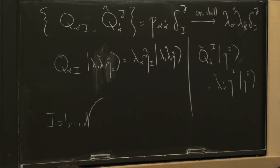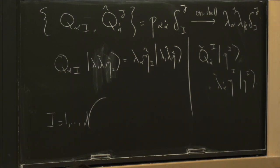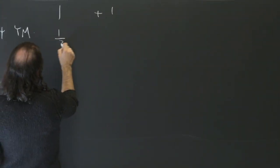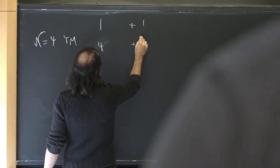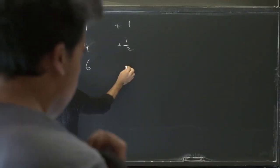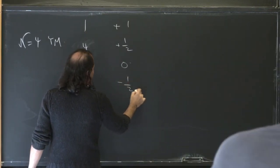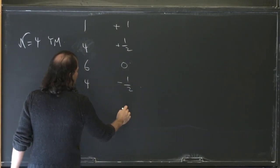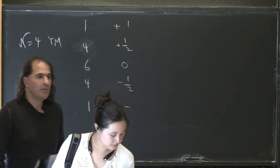This is a strategy you can apply for any amount of supersymmetry. But life is especially nice with maximal supersymmetry, because with maximal supersymmetry we can use either N=4, if we're talking about Yang-Mills, or N=8, if we're talking about gravity. We can use the SUSYs to put all the particles of all helicities into one multiplet together. So for N=4 Yang-Mills, we have 1 gluon of helicity +1, 4 fermions of helicity +1/2, 6 scalars of helicity 0, 4 fermions of helicity -1/2, and 1 gluon of helicity -1.